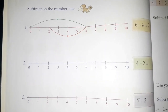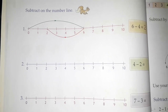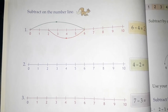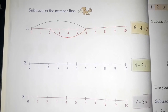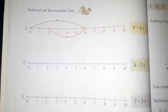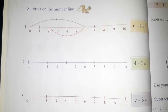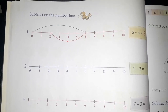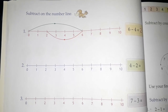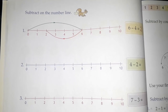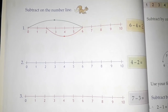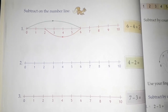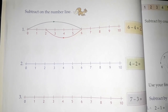Now the next question is: subtract on the number line. Do you remember? We have done addition on the number line also — we did addition by doing an activity. Let's recall it back, and then we will start subtraction on the number line.